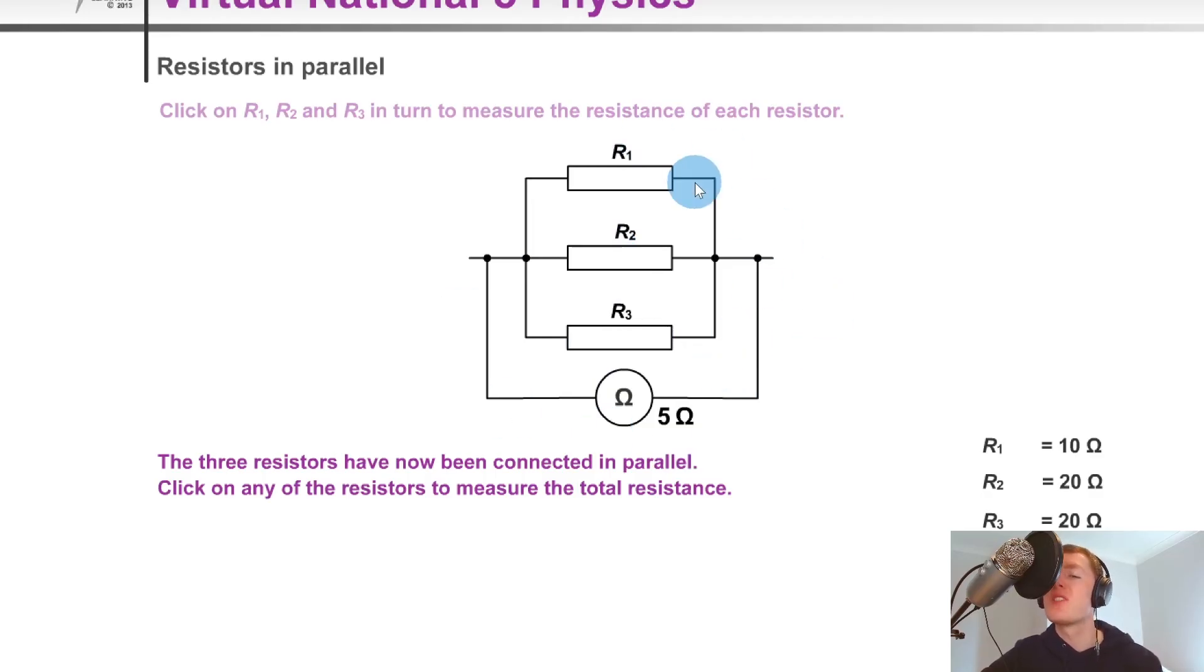If you plugged all the numbers into that equation, 1 over RT equals 1 over R1 plus 1 over R2 plus 1 over R3, you would get out a value of 5 ohms as your total resistance. And notice that this value of 5 ohms is smaller than the 10 ohms and the two 20 ohm resistors, and that is something that you'll always see.